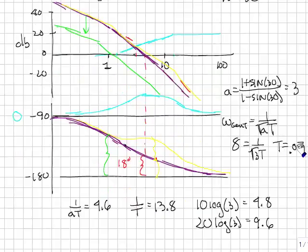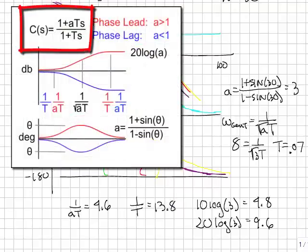Once I've calculated the value for T, I can then calculate the zero and pole locations. The pole location is 1 over AT, 4.6. The zero location will be 1 over T, 13.8. That's what I expect. A pole occurs and then a zero occurs.